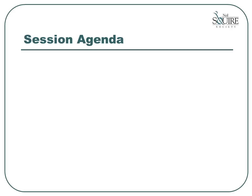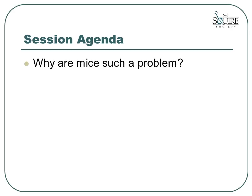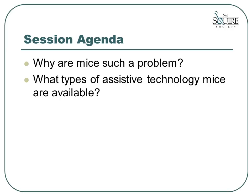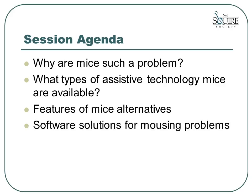This presentation will cover the following topics: why are mice such a problem, what types of assistive technology mice are available, the features of these assistive technology mice, and some of the new software solutions for mousing problems. If you do not have any problems using a standard mouse at this time, you may still find some information in this presentation useful to improve your use of the mouse.